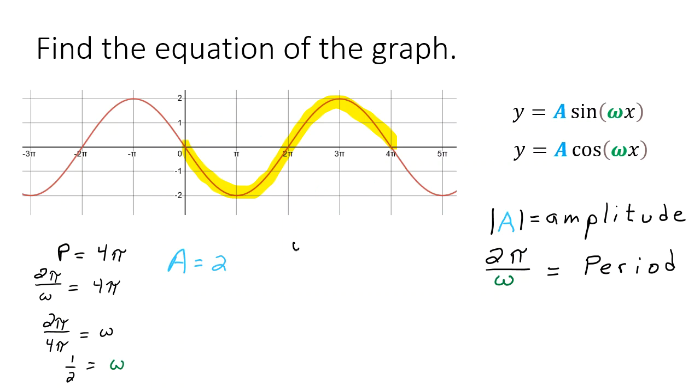So let's write our final answer here. y equals my amplitude is 2 but I need the negative. That's going to flip it over the x-axis. Sine of and then we'll plug in our omega value which is one half and x. All right so I think that will do it for that one.